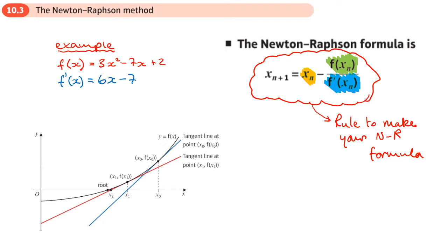So the Newton-Raphson formula is x_{n+1} = x_n minus our function, which is 3x² - 7x, or 3x_n² - 7x_n + 2, so all the x's need to have the little n's by them, divided by 6x_n - 7. And there we go. We've created a Newton-Raphson formula.